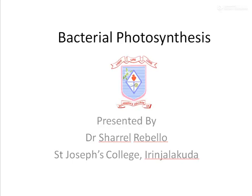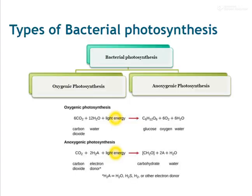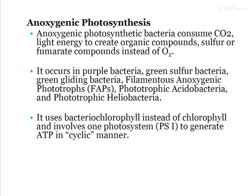Hi dear students, welcome back to the second session of bacterial photosynthesis. As we had mentioned, bacterial photosynthesis consists of two types: oxygenic photosynthesis, in which oxygen is involved, and anoxygenic photosynthesis, in which oxygen is not involved. Oxygenic photosynthesis is carried out by cyanobacteria, whereas anoxygenic photosynthesis is mainly carried out by green sulfur bacteria, purple bacteria, filamentous anoxygenic phototropes, phototrophic acidobacteria, heliobacteria, etc.